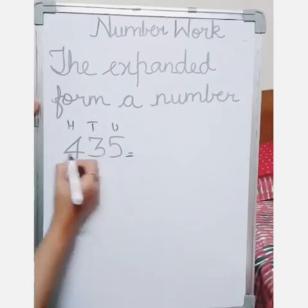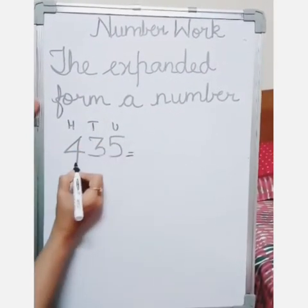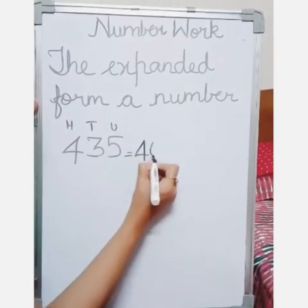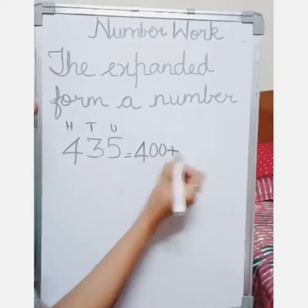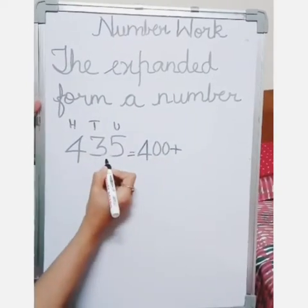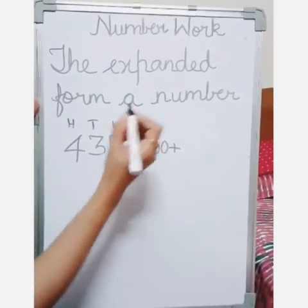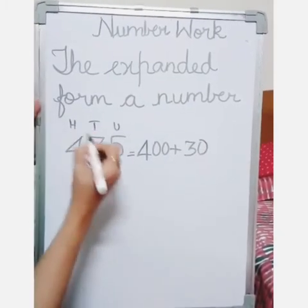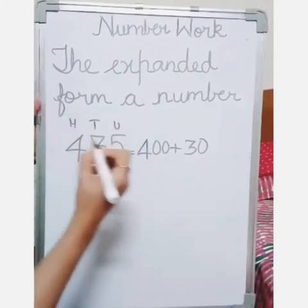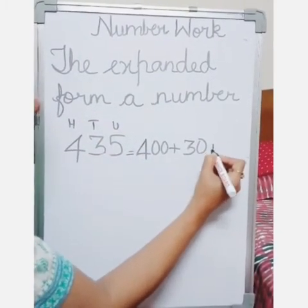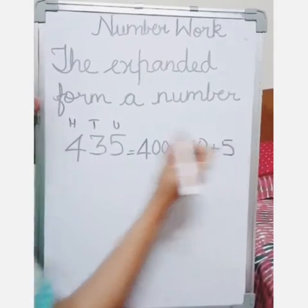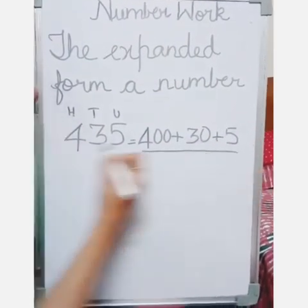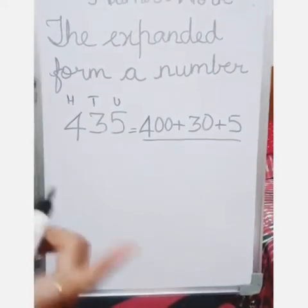So to write this: what is the number in the hundreds place? It is 4, so we write 400. Then go on to the next place — what is the number in the tens place? It is 3, so 3 tens means 30. And what is the number in the units place? It is 5, single units. So this is the way to write the expanded form of a given number.